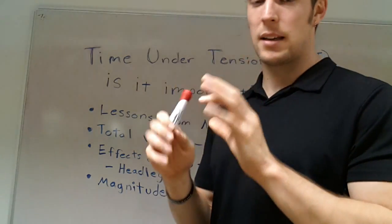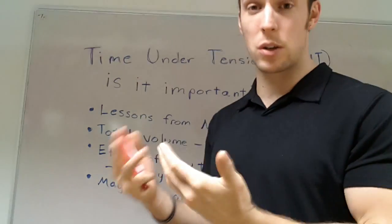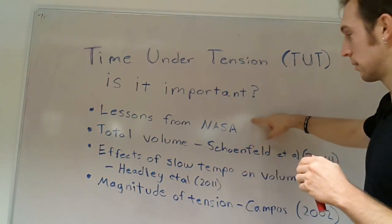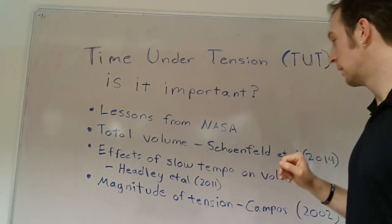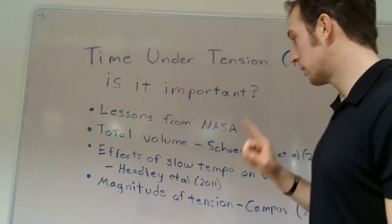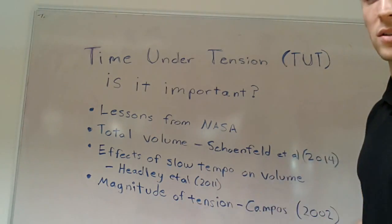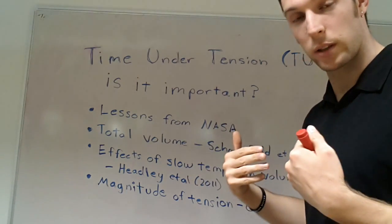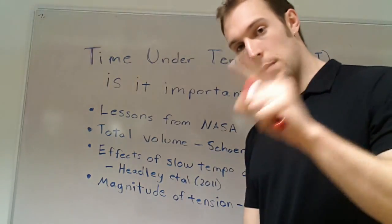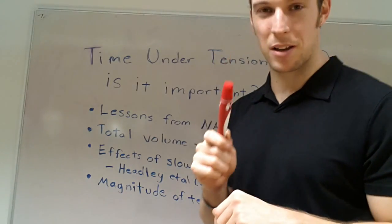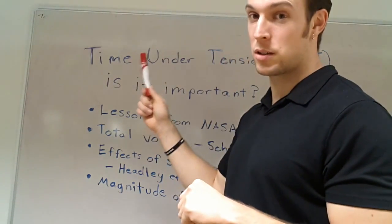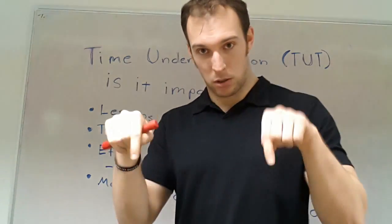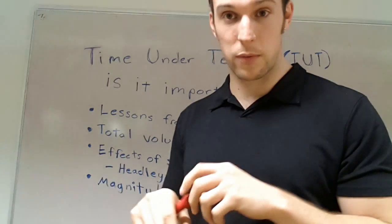The take-home message: time under tension is nice, but what we're really trying to get to is total volume. We need to remember that the magnitude of tension must matter — that's the lesson from the astronauts. Total volume of work is what matters most, but after volume we have to think about the magnitude of tension: the load. We can't go too light, and if we go too slow, that reduces our maximal strength and total work done. So, is time under tension important? Yes — but only because it contributes to volume. It's not just time under tension, but time AND magnitude of tension, which is volume. Make sure to check out the studies in the comments below. See you guys next time.